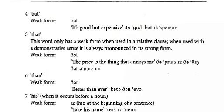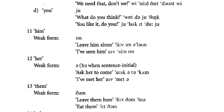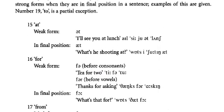Another example: 'It's good but expensive' — 'but' is normally weak, but we raise our voice a little. Also, 'the price is a thing that annoys me' — 'that' is not focused and you lower your voice on it. Finally, for the final position of 'at' and 'for': 'I'll see you at lunch' — 'at' is in weak position as a preposition. 'Tea for two' similarly uses 'for' weakly.